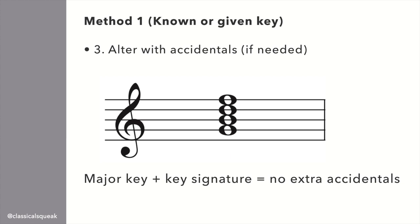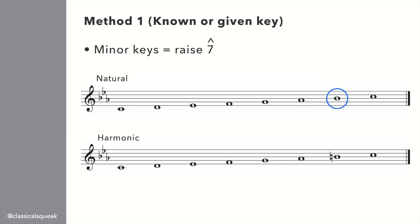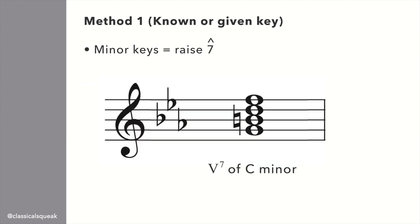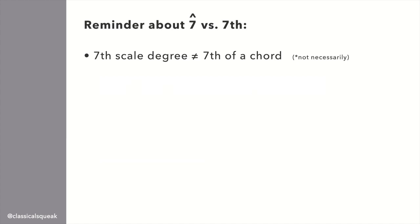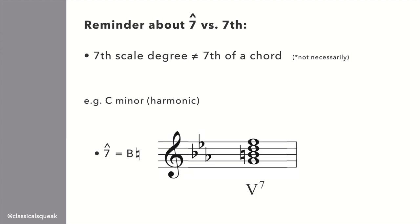We are in a major key, so no extra accidentals are needed, which means G, B, D, F is the dominant 7th of C major. In a minor key, we have to remember to raise the 7th scale degree. If we have C minor, there is a Bb in the key signature, which needs to be raised to B natural. Therefore, we have to raise it to B natural for the G7 chord. Remember that the 7th scale degree is not necessarily the same as the 7th of a chord. In C minor, B natural is the leading note or scale degree 7. In the V7 chord, B natural is the 3rd of the chord, but the 7th of the chord is an F.